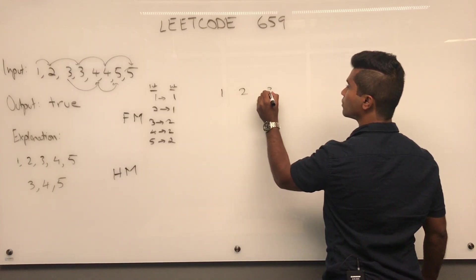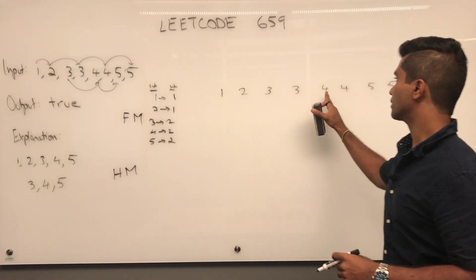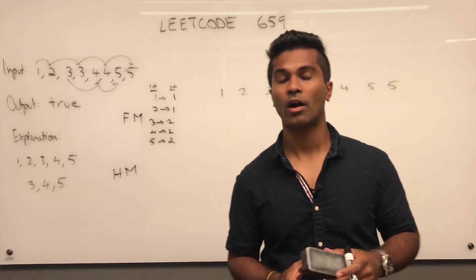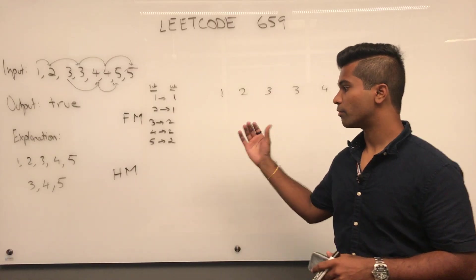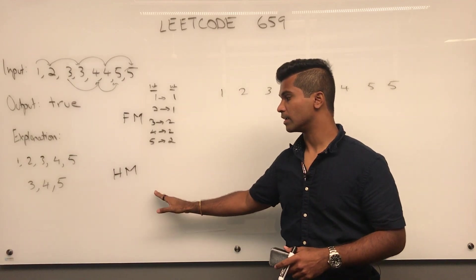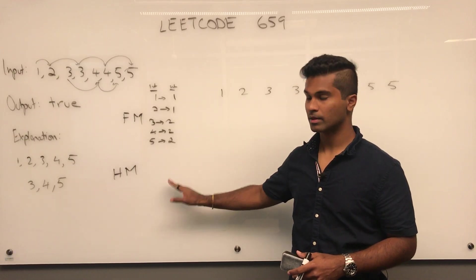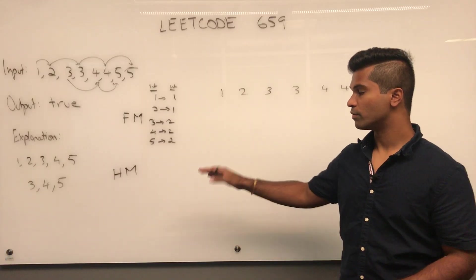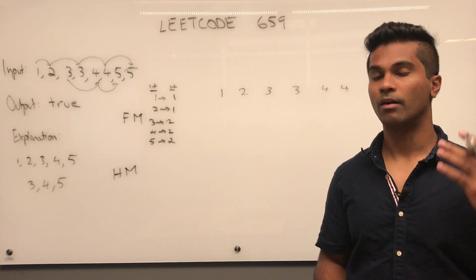We have one two three three four four five five. The hypothetical map keeps track of numbers that can hypothetically be added to an existing subsequence. If we're visiting a number like three, four, or five and it finds a non-zero value for that integer in the hypothetical map, it will attach itself to an existing subsequence before trying to create its own. It's not a standard algorithm but follow along and you'll see what I mean.